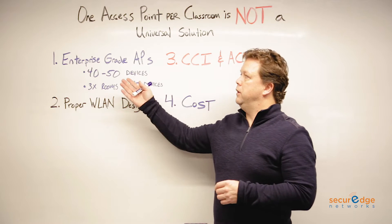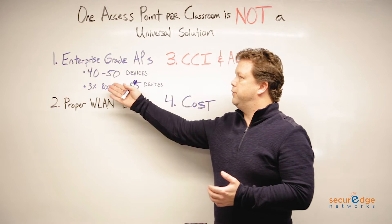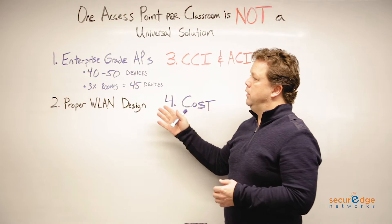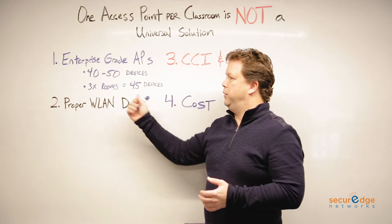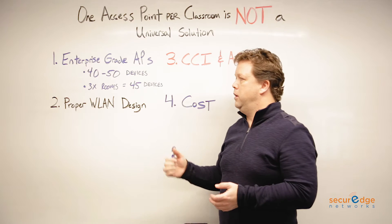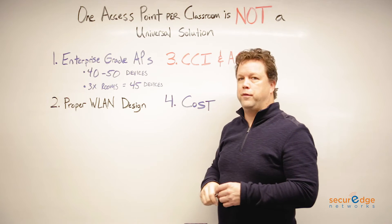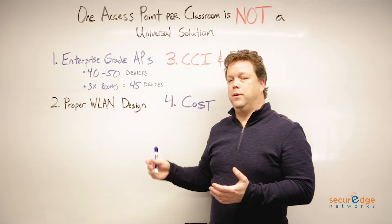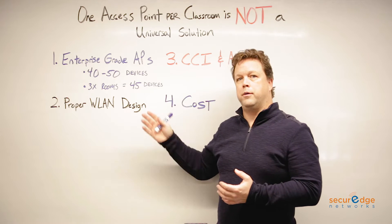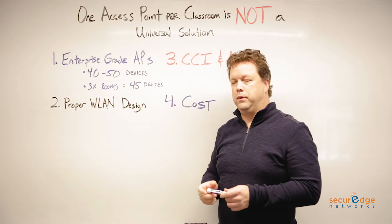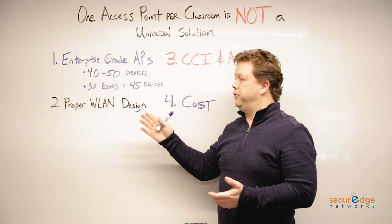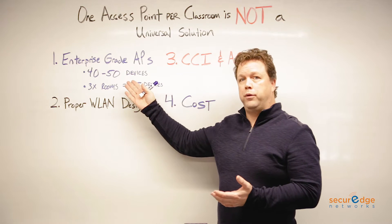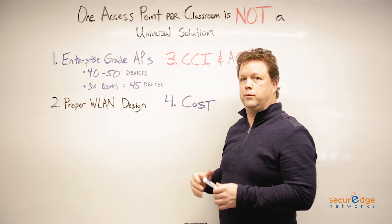The first reason is, if you're using enterprise-grade APs, they are fully capable of handling 40 to 50 devices at a time without any issue. If you think about a K-12 environment with three rooms with about 30 devices per room, that's really only going to give us about 45 devices actually connected. In the real world, we're never seeing 100% of client devices connected at any one time — we're only seeing about 50%, which nets us about 45 devices connected to the wireless LAN. That's well within the 40 to 50 devices the AP can handle without issue.